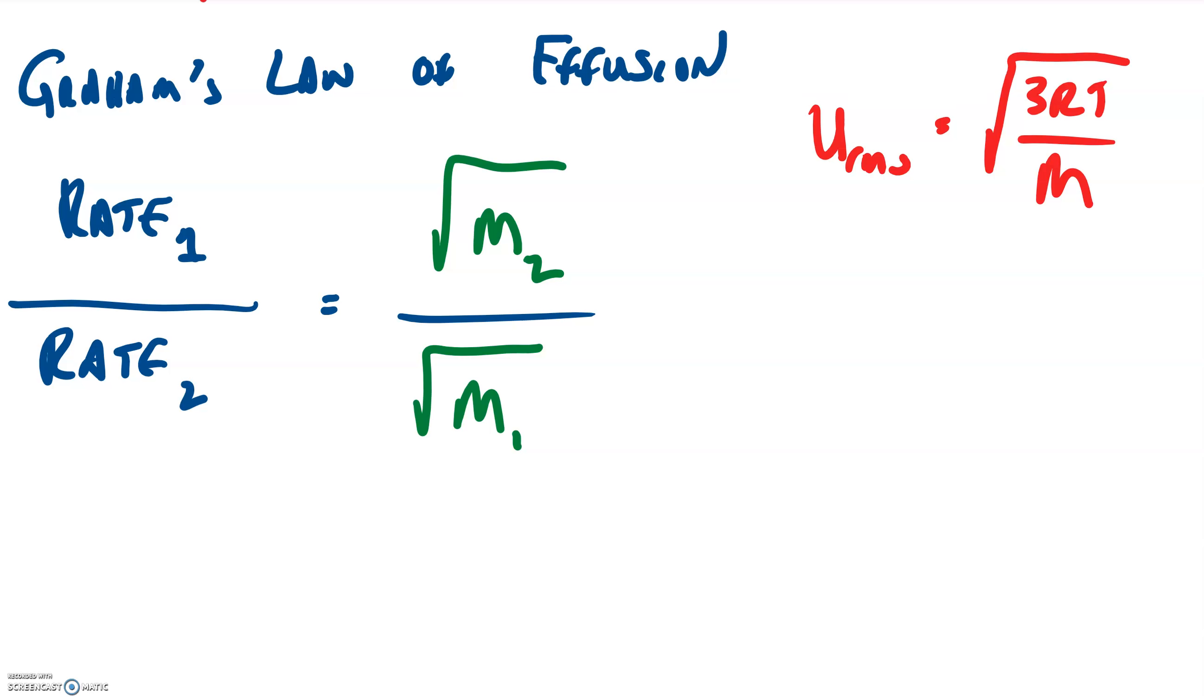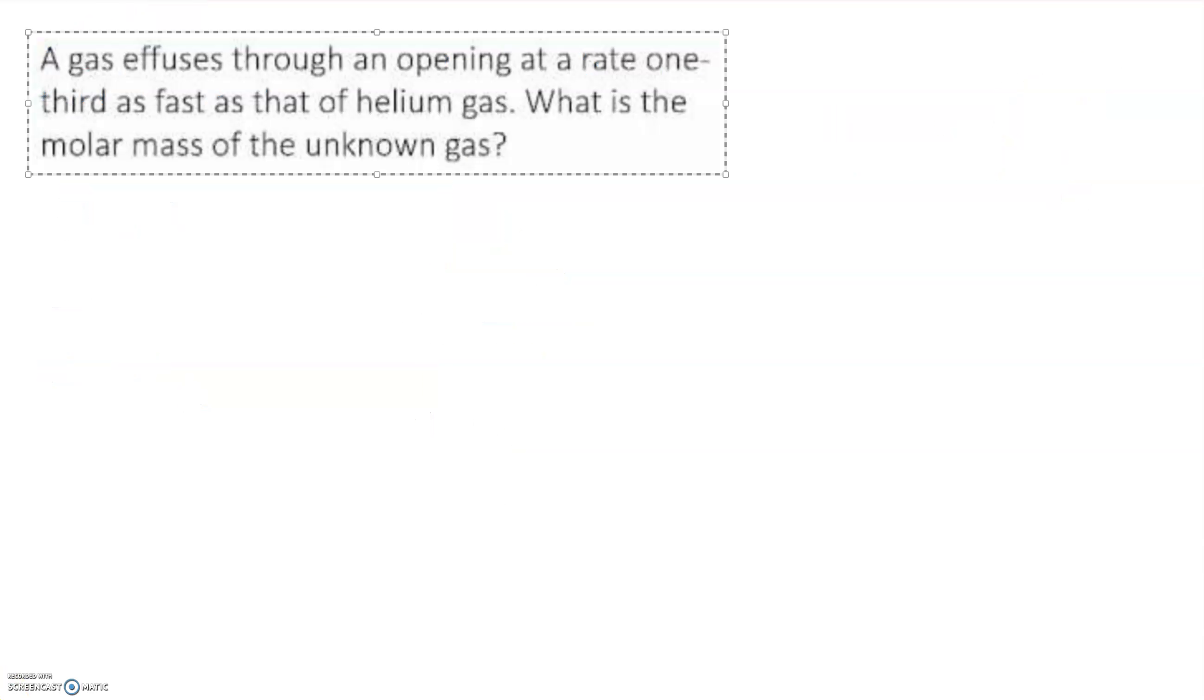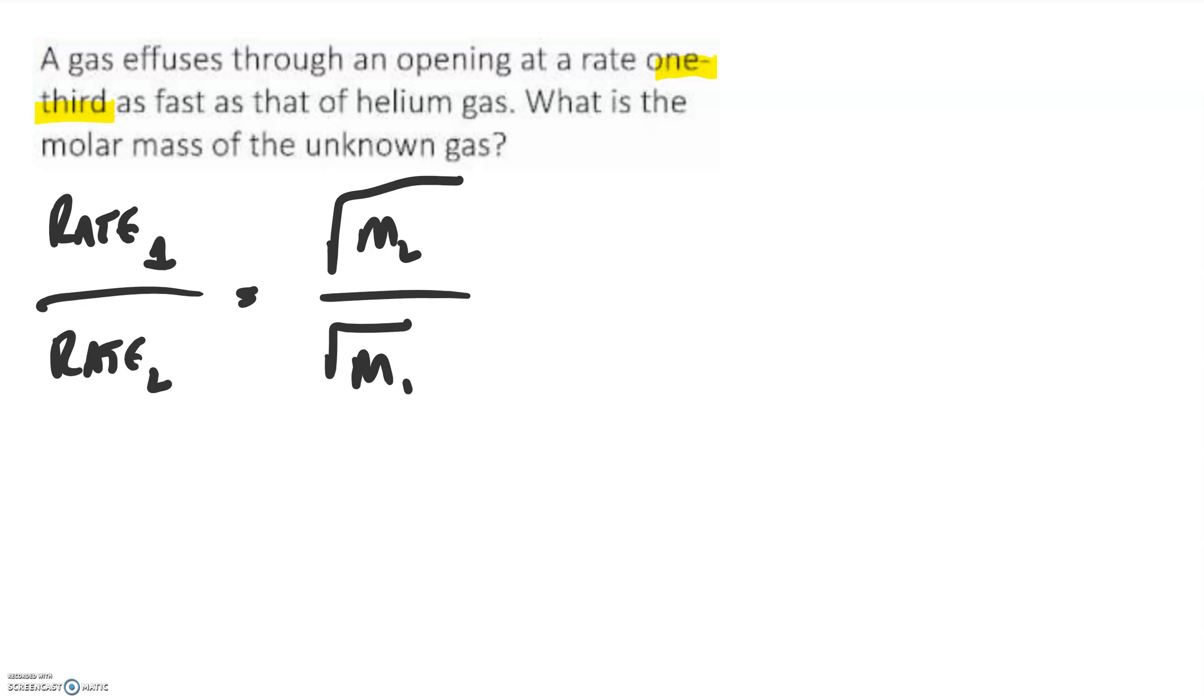So let's try one and see if we can figure this out. Here's a typical problem we might expect to run into. It says a gas effuses through an opening at a rate that is one-third as fast as that of helium gas. Obviously, that means that the helium gas is going to be three times faster. So what is the molar mass of the unknown gas? If Graham's law of effusion says that the rate of gas 1 over the rate of effusion of gas 2 is equal to the square root of the mass of gas 2 over the square root of the mass of gas 1.